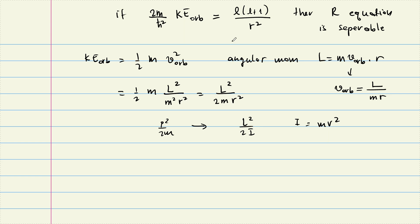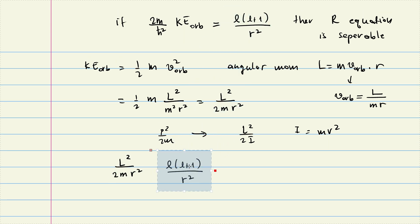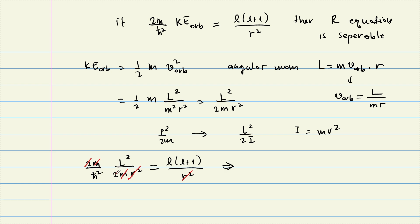Setting this orbital kinetic energy equal to the required expression — because I want separability — you can see the r's cancel, the 2m over ℏ² factors cancel, and the result is that the magnitude of the angular momentum vector |L| equals ℏ times √(L(L+1)).